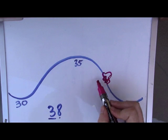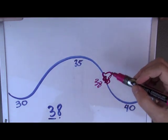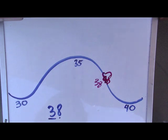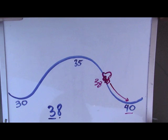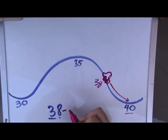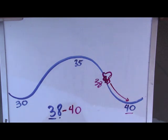Now if this were a toy car and I let it go, it would fall down the mountain and land right here at forty. So thirty-eight rounded to the nearest tens place is forty.